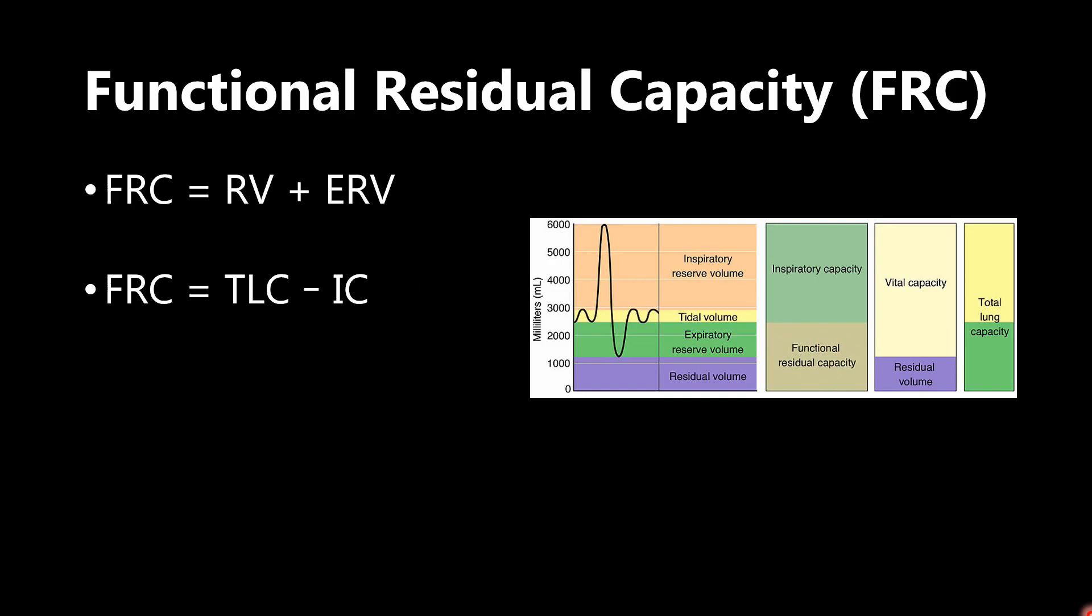Important to note here that there are a couple different ways to calculate it. I would try to memorize these equations just in case they give you the numbers or they give you a graph and ask you to calculate. So we can see here that functional residual capacity is residual volume plus expiratory reserve volume, which we can see right here. If we add these two numbers together, we're going to get this brown box, the functional residual capacity.